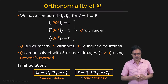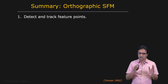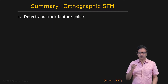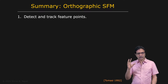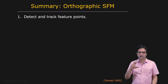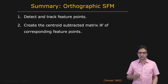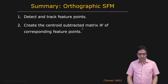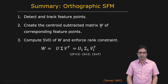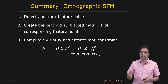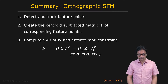Let's summarize structure from motion using the Tomasi-Kanade factorization method. We capture a video of a scene, detect and track feature points, centroid-subtract their coordinates, and use those coordinates to construct the observation matrix W. Once the observation matrix is computed, we apply singular value decomposition and enforce the rank constraint to obtain the economical representation W = U1 · sigma1 · V1 transpose.